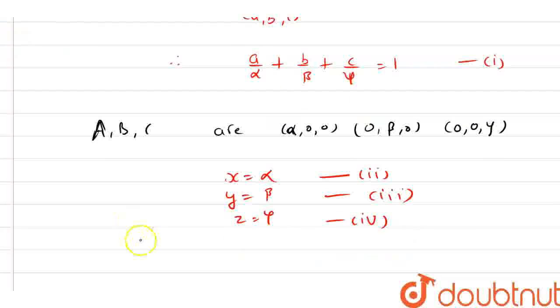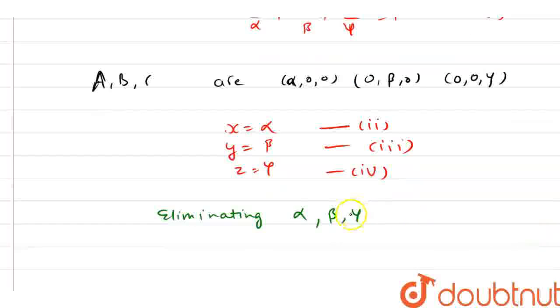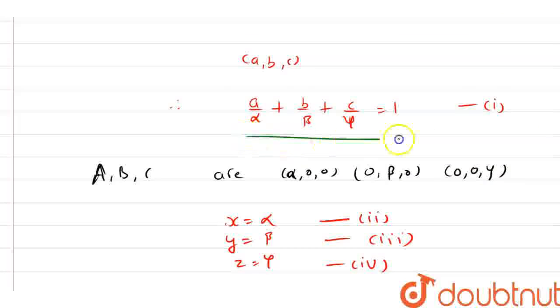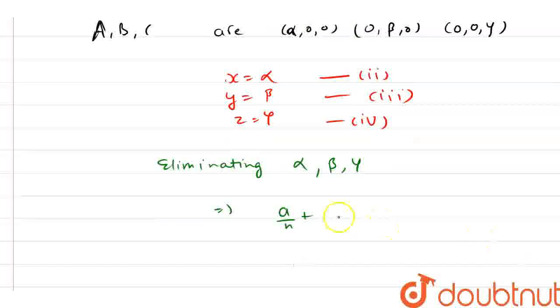So now the locus of their point of intersection will be obtained by eliminating alpha, beta, gamma from these with the help of relation 1. So here we have A by X plus B by Y plus C by Z equals 1.